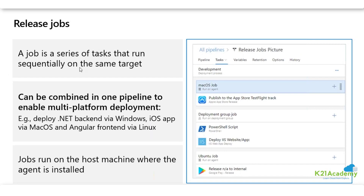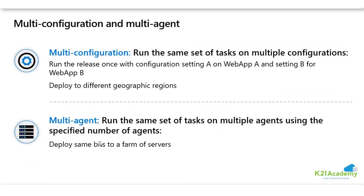In release jobs, you have a bunch of tasks. A job is a series of tasks that run sequentially on the same agent and can be combined in one pipeline to enable multi-platform deployment, like deployment of a .NET backend. You can select to run on the host machine where your agent is installed. You can have a single agent, multiple agents, Microsoft-hosted agents, or self-hosted agents. Multi-configuration runs the same set of tasks on multiple configurations - for example, setting A for web app A and setting B for web app B.